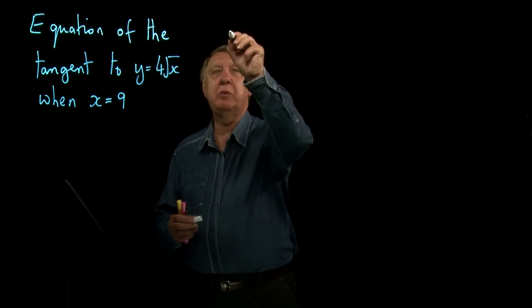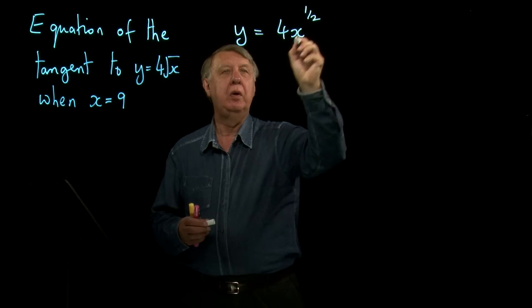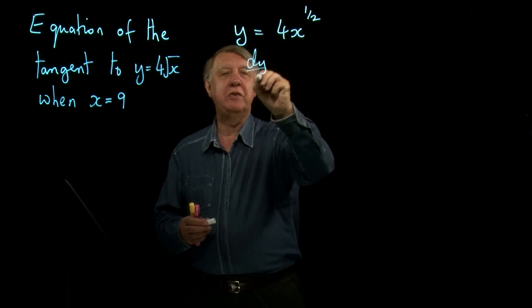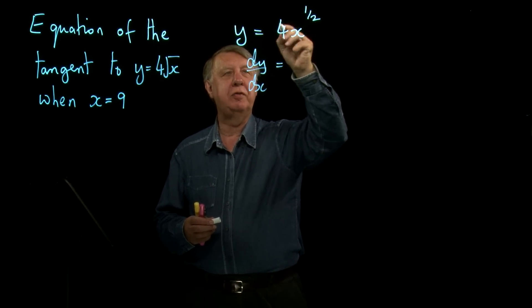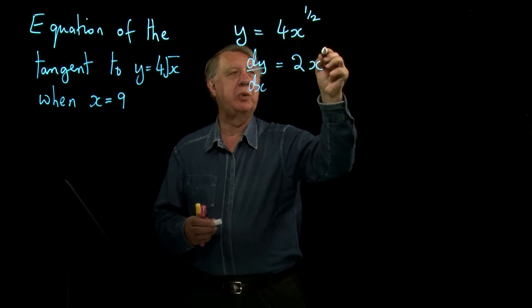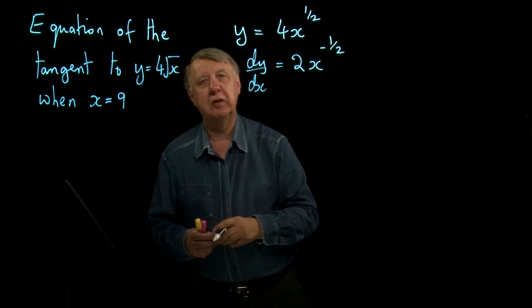So here we need to write that as 4x to the half, and then we need to differentiate. Bring down the power, a half times four is two, take one away from a half is negative a half.